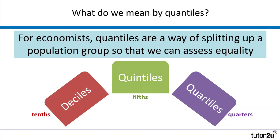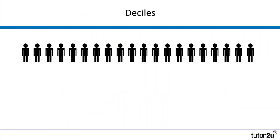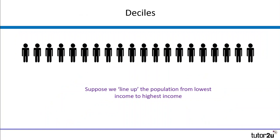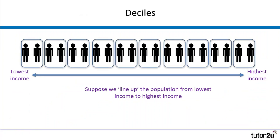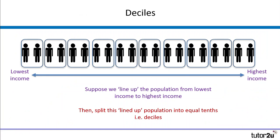We're going to take a super quick look at what each of those looks like. Now imagine this is our population displayed on the screen — we've got 20 people in our population and what we're going to do is line them up from the lowest income to the highest income. Because we're in deciles we're thinking about splitting it into 10 equal groups. These are our deciles, so each group is one decile. Our first decile is the bottom 10% of the population in terms of income, and so on all the way up to the 10th decile which is the 10th of the population with the highest level of income.